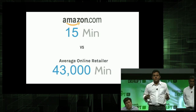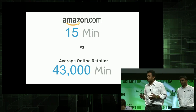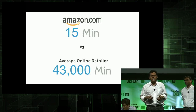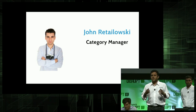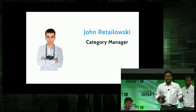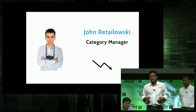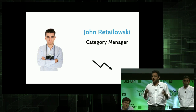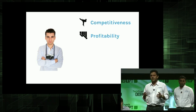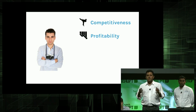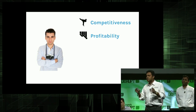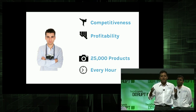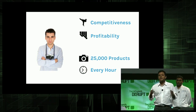An average retailer is just not able to compete in this new world of e-commerce. There's a huge analytical divide. Retailers just don't have the firepower to make quick decisions for all their products. John is a category manager for cameras and camcorders at a very large electronics retailer. John's problem today is that his revenues are going down and he's losing market share. He can't move products because he has to compete with 20 other online retailers selling the same products, without losing profitability, and for 25,000 products every single hour. That is a non-trivial problem.